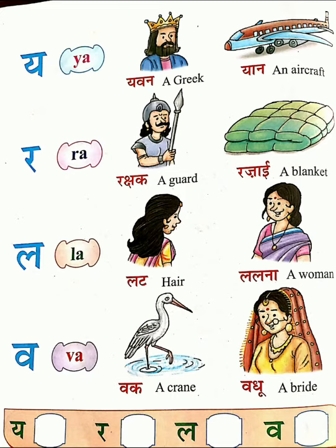Letter VA. 'Vak', V-A-K — a crane, C-R-A-N-E. Then 'vadhu', V-A-D-H-U — a bride, B-R-I-D-E. So here we stop the letter VA. Still more letters remain — we will do those in the next class.